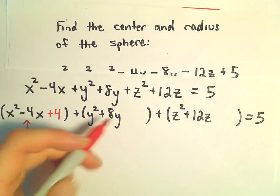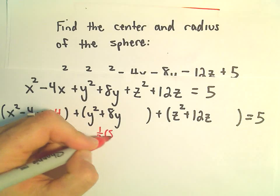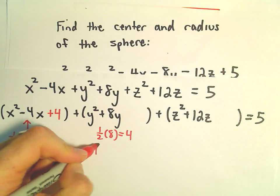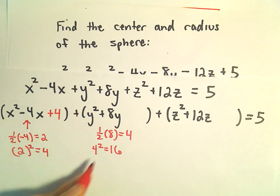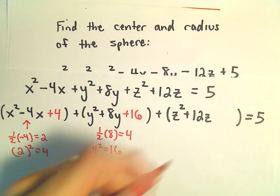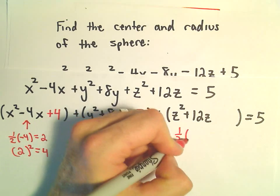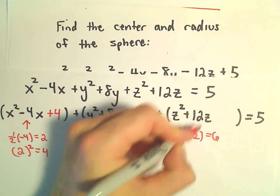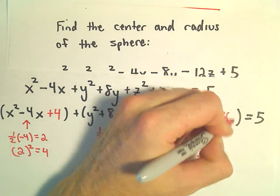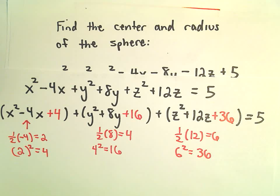I do the same thing. I look at my 8y, I take one half of the coefficient on the y. So one half of 8 is going to be 4, 4 squared is going to be 16. I plug a plus 16 in there. And same thing, I'll do one half of 12, that'll give me 6. 6 squared is going to be 36, so I'm going to add 36 into that set of parentheses.